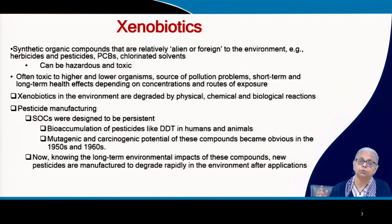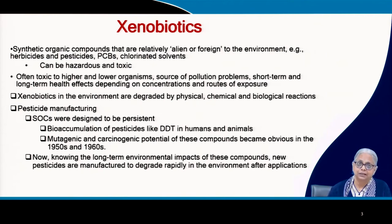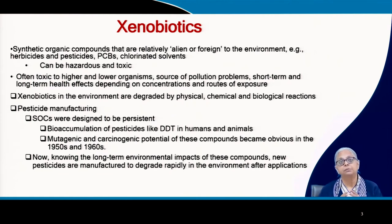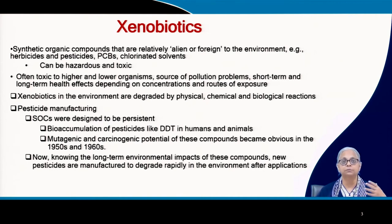DDT is one of the best documented examples of a pesticide that bioaccumulates. Many other pesticidal compounds have mutagenic and carcinogenic potential, which became obvious through the 50s, 60s, and 70s. Once it was recognized that these compounds are likely to cause long-term health effects, it became necessary for pesticide manufacturing companies to prove that whatever they are manufacturing will degrade as rapidly in the environment as possible. What does this all have to do with microbiology? These are alien to the biota of the environment. If we have microbes that can be acclimated to degrading these compounds, then we can solve the problem with relative ease.